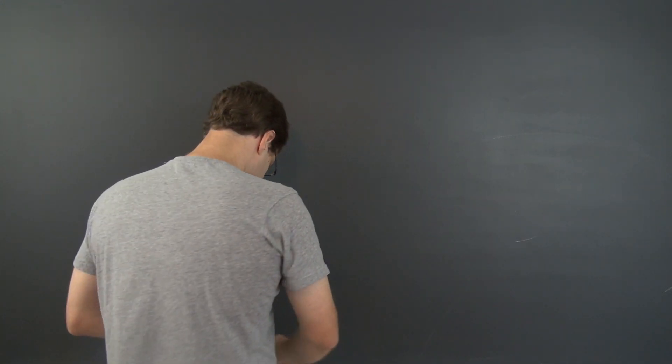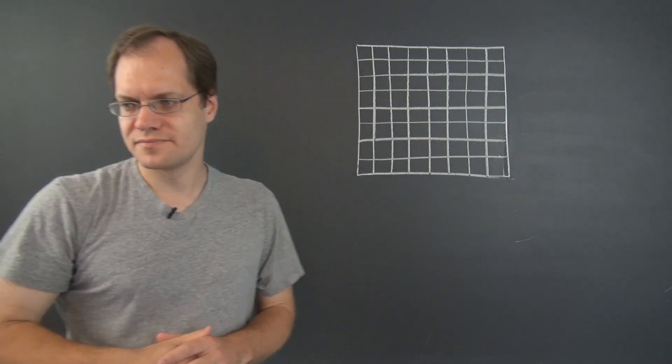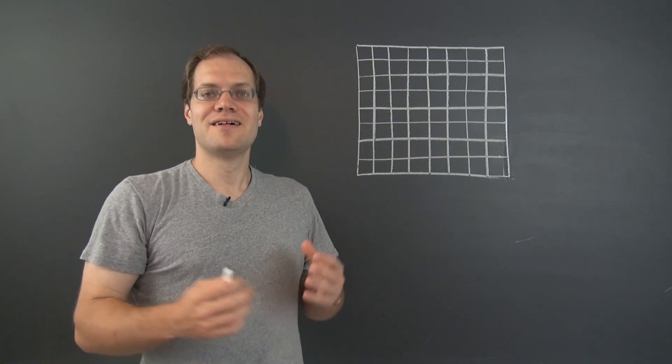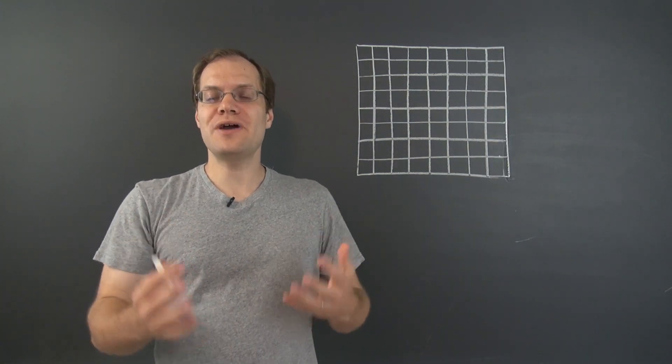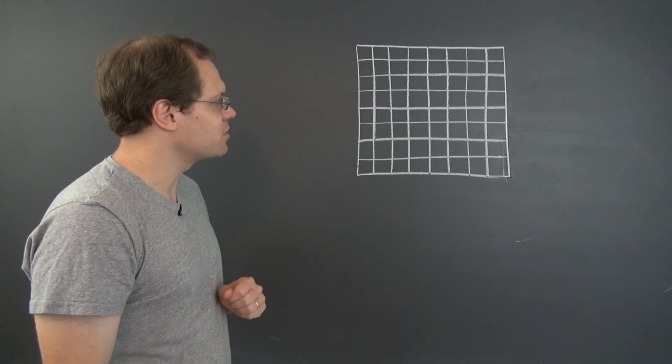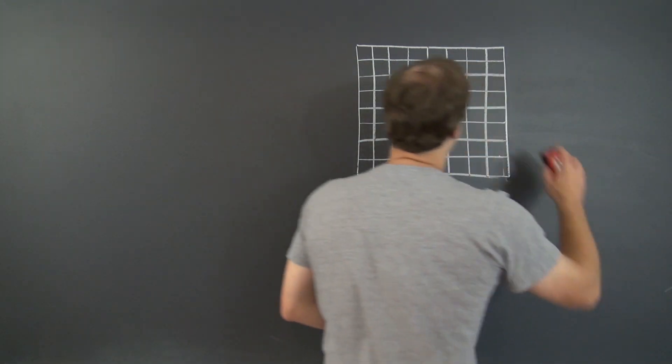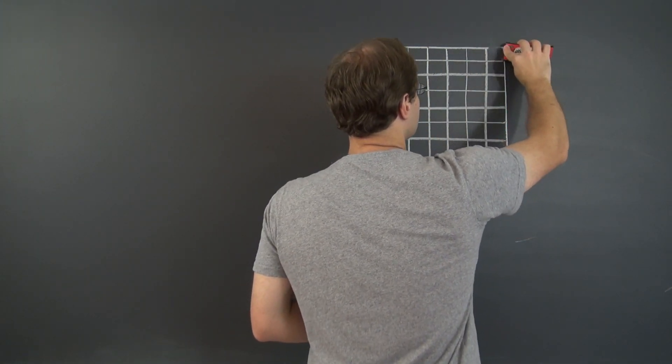So let me draw something on the board and then tell you what the problem is. Here we go. Alright, so suppose you have an 8x8 grid of squares, something like a chessboard, and that the two opposite corners are removed, like this.